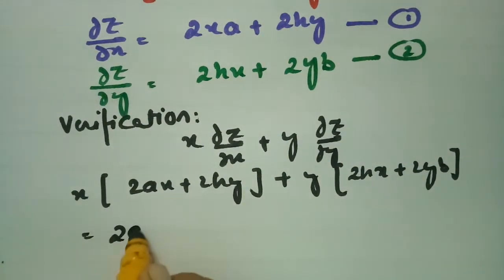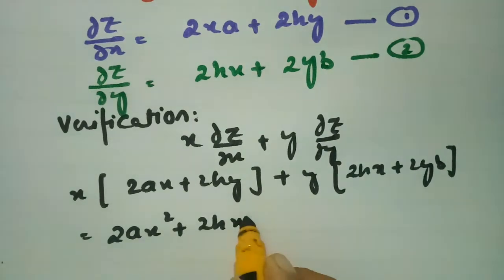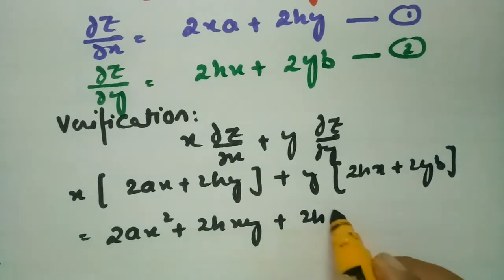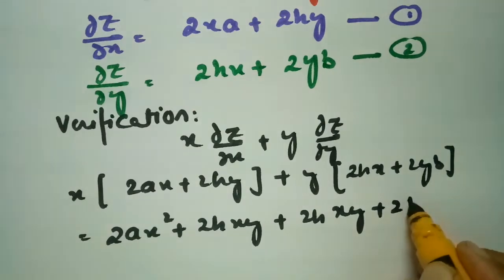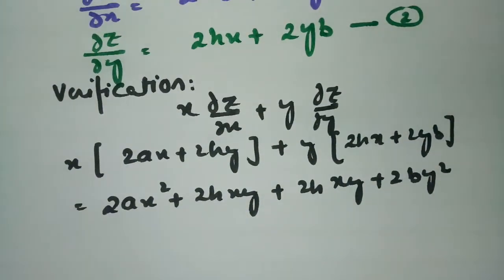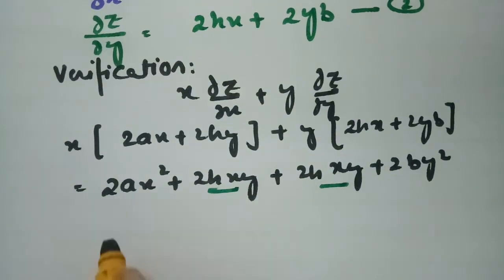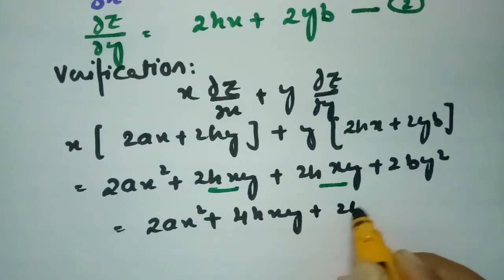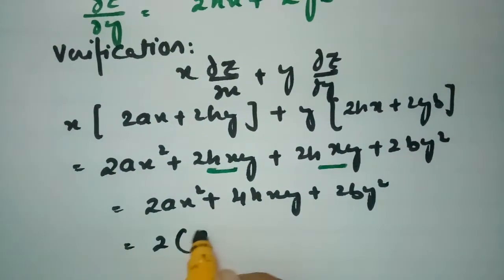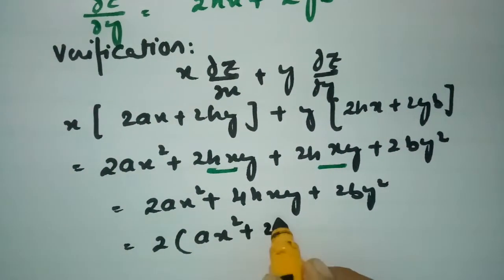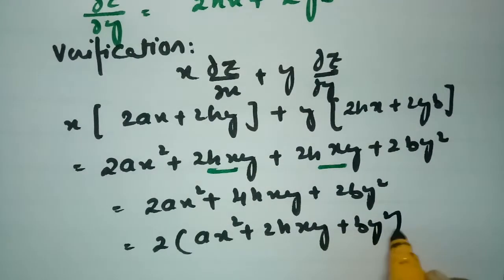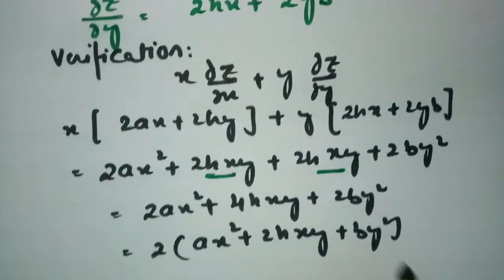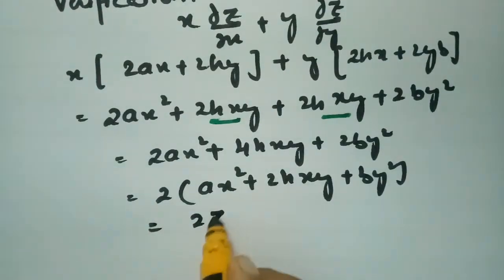Multiplying out: this gives 2ax² plus 2hxy from the first term, and 2hxy plus 2by² from the second term. These are like terms — 2hxy and 2hxy — so this becomes 2ax² plus 4hxy plus 2by². Taking 2 common gives 2(ax² plus 2hxy plus by²). Since ax² plus 2hxy plus by² is nothing but z, this equals 2z.